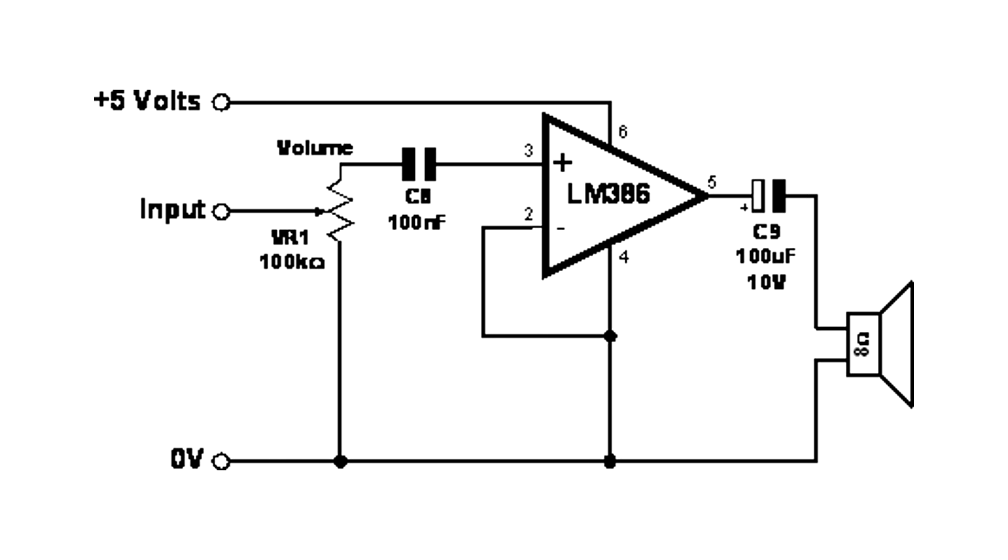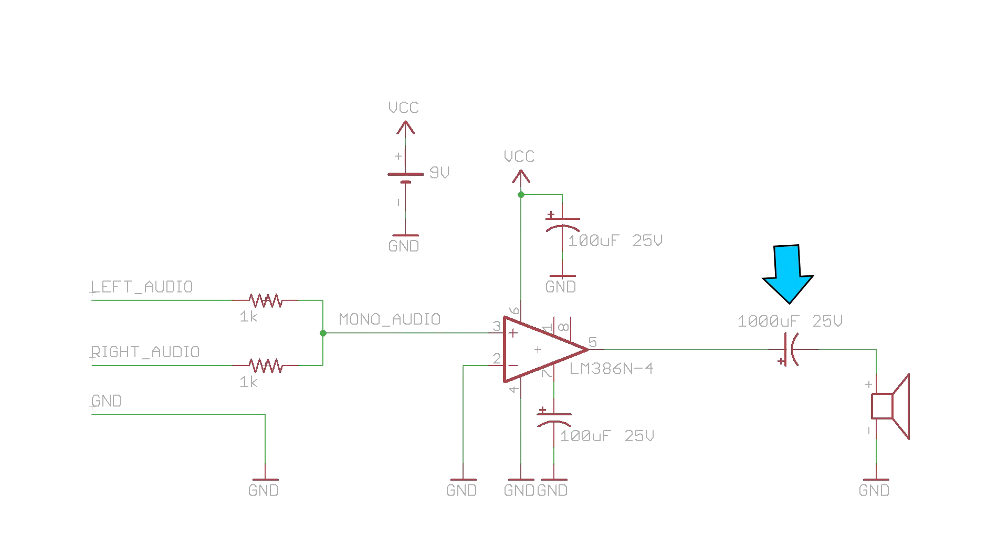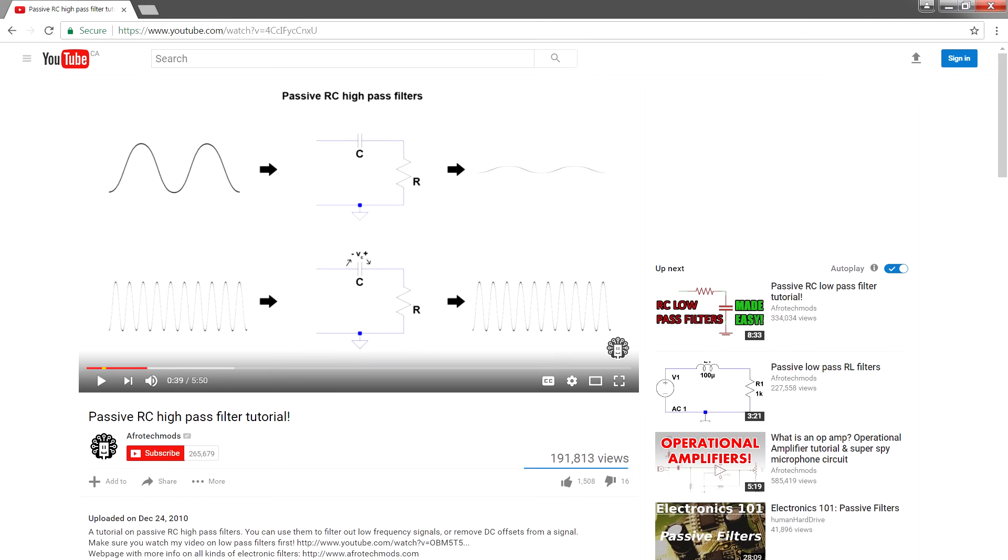Don't be misled by crappy schematics that you find on the internet with low values like 100 microfarads. You want to use at least 1000 microfarads to guarantee good bass with a wide variety of speakers. If you want to know more about why, make sure you've watched my video on RC highpass filters.